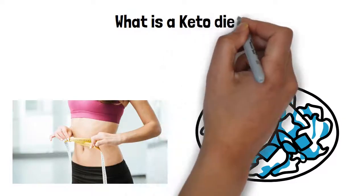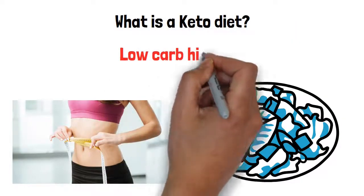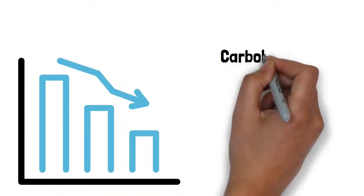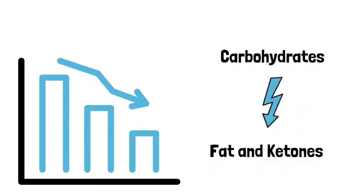What is a keto diet, you ask? A keto diet is a low-carb, high-fat diet that lowers blood sugar and insulin levels and shifts the body's metabolism away from carbs to fat and ketones through a process called ketosis.